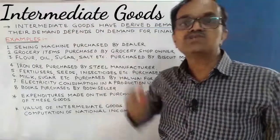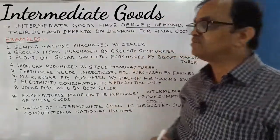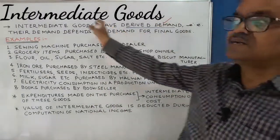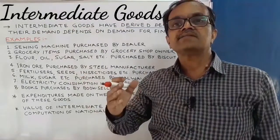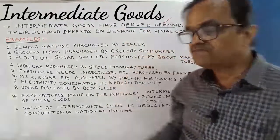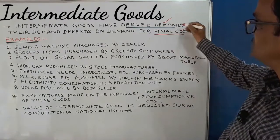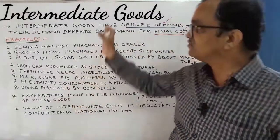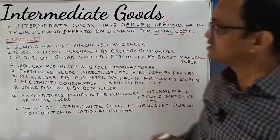These goods have derived demand. Derived demand means the demand for these goods depends on the demand for final goods. If there is demand for final goods, only then will demand for these intermediate goods be generated, and therefore their demand is called derived demand.